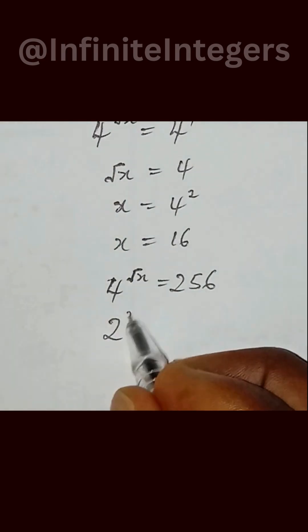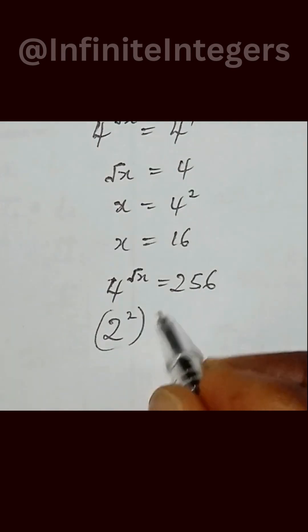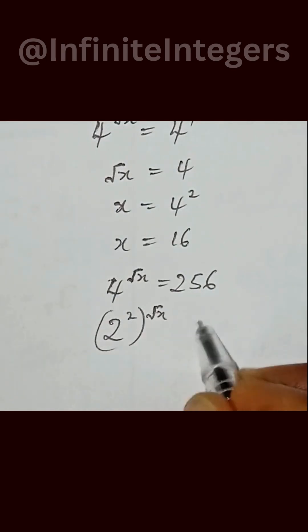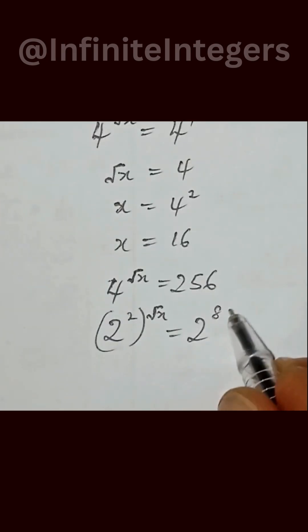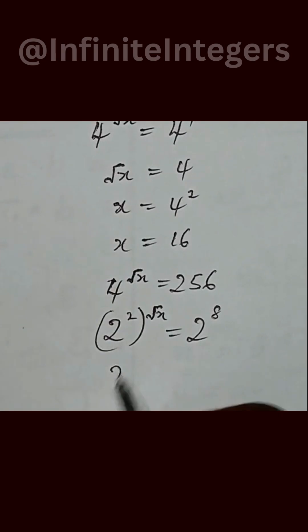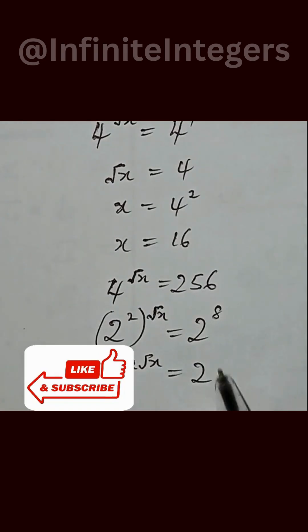And that is given as 2 to the power of 2 square root x and 2 to the power of 8. We have 2 to the power of 2 square root x equal to 2 to the power of 8.